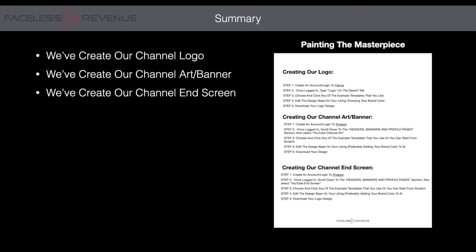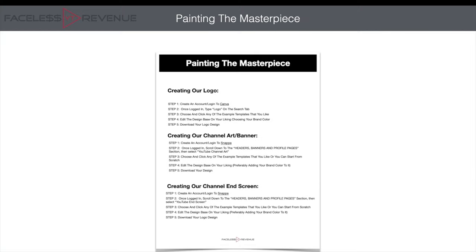Let's summarize what we've done: we've created our channel logo, we've created our channel banner, and we've created our channel end screen. Remember guys, I left a cheat sheet PDF below that you can click and use. I wanted to make it simple for those who are less technical. You can slow down this video and go at your own pace with the PDF to follow along. By this point we should already have a logo, channel art, and channel end screen, and you'll see how beneficial that is.